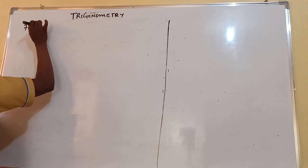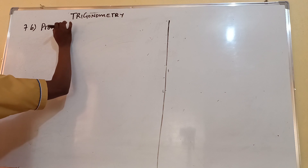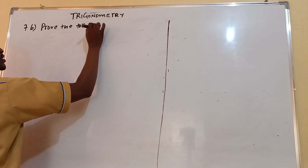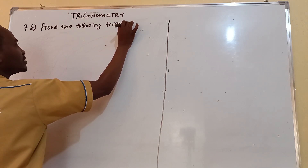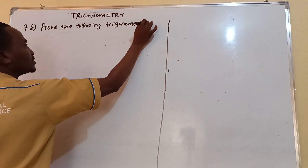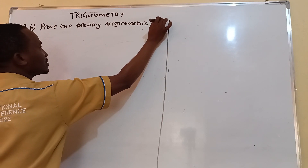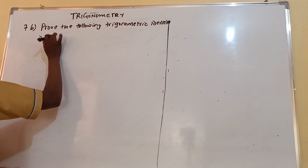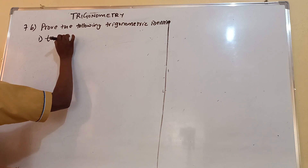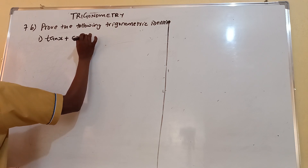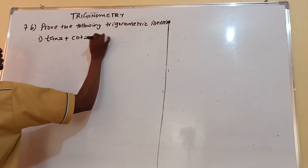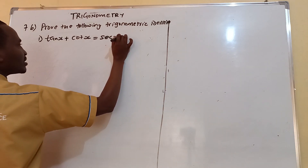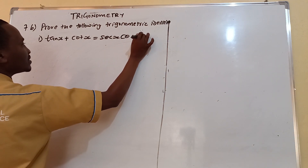We are told: prove the following trigonometric identities. This is the normal one: tan X plus cot X equals sec X times cosec X.